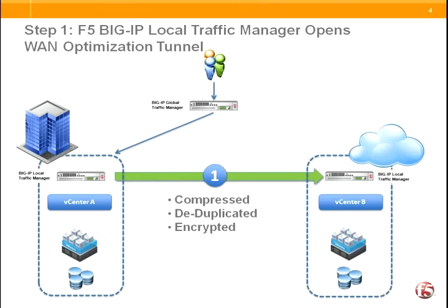The first step in this process is to connect the local data center to the cloud site or the secondary data center. We do this connection through an iSessions tunnel which is a feature of Big IP local traffic manager. This iSessions tunnel offers data compression as well as data deduplication and encryption, ensuring that the traffic flow as we migrate the data store and the virtual machine itself through this tunnel will be secure and optimized across the WAN.